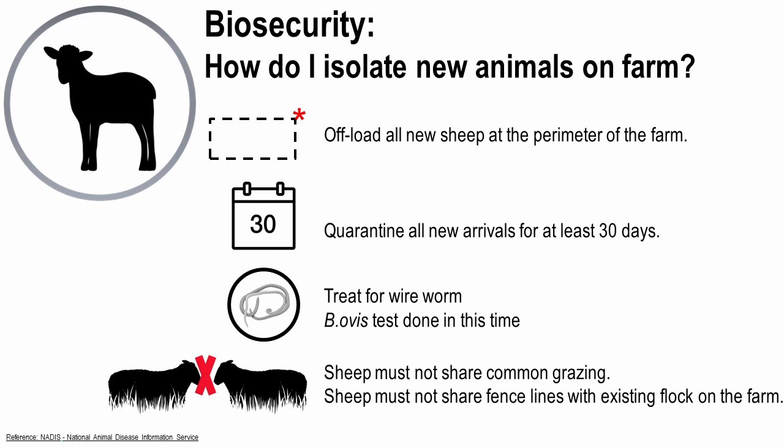The next principle we need to look at is the isolation of animals. This isolation has to do with when you have purchased animals — how do you isolate new animals on the farm? You offload all new sheep at the perimeter of the farm. All new arrivals need to be quarantined for 30 days. The wireworm has a life cycle of between 14 and 21 days. Upon arrival, Brucella ovis needs to be tested for. New sheep should not share common grazing with the existing flock, and must not share any fence lining with existing stock.